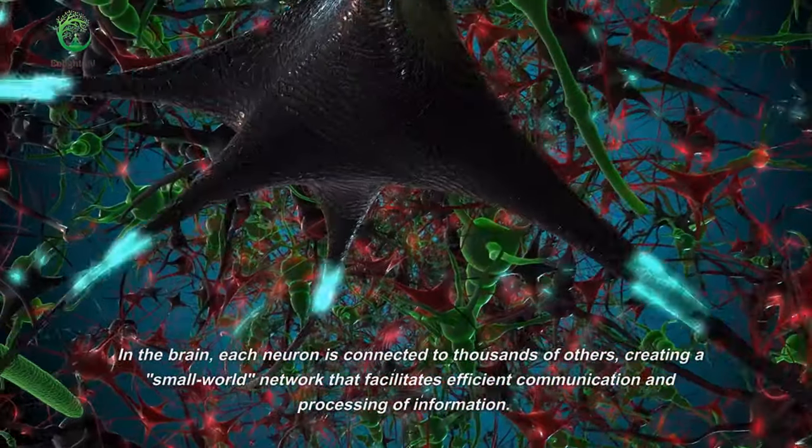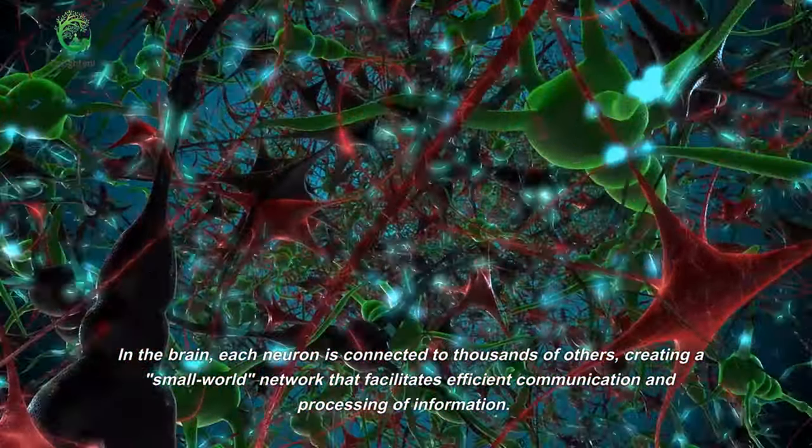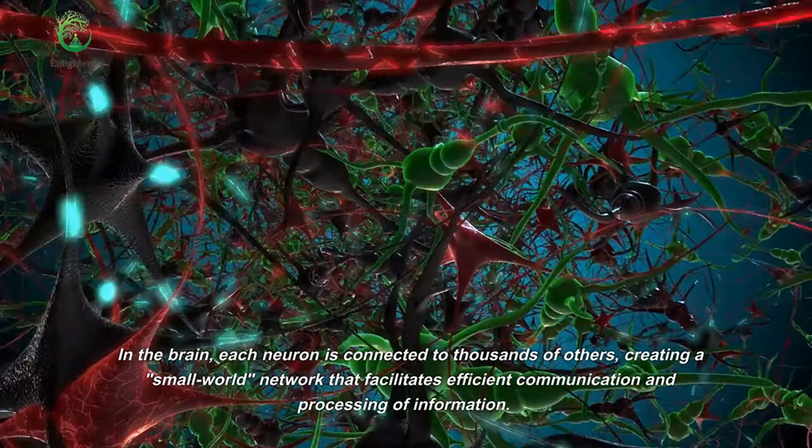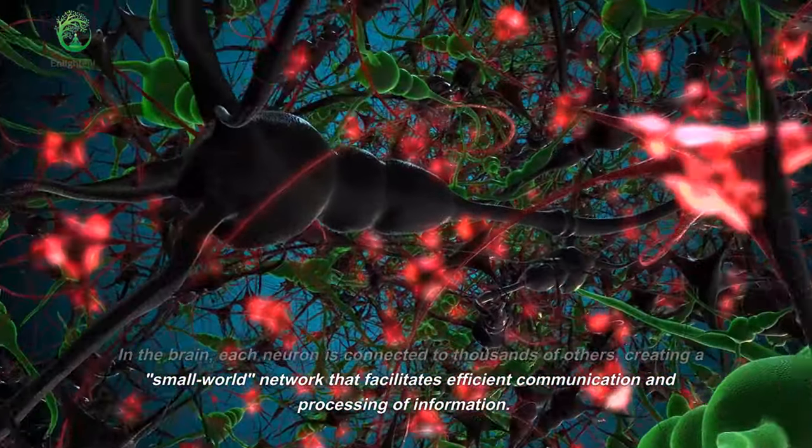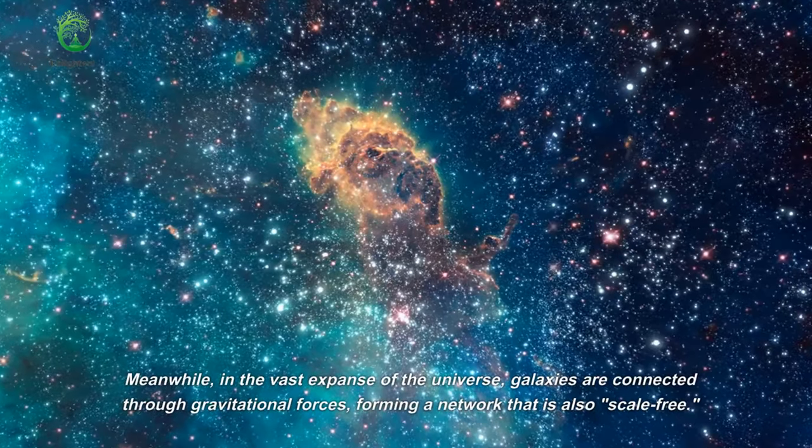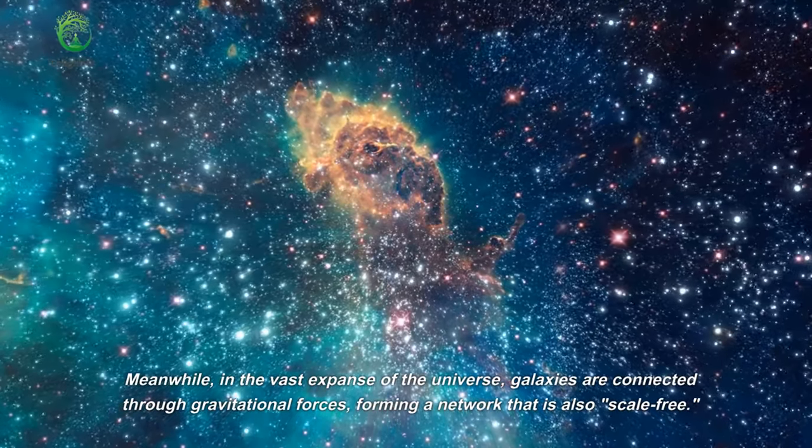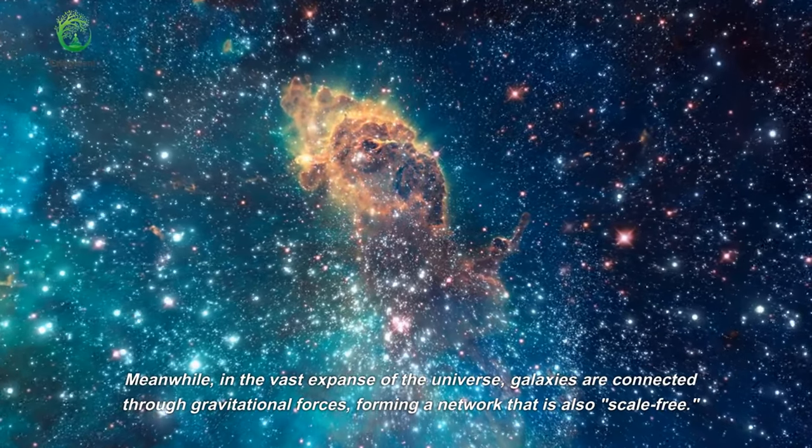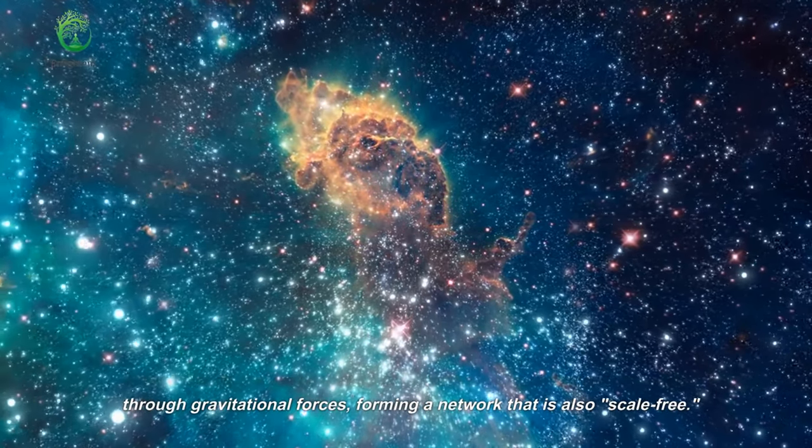In the brain, each neuron is connected to thousands of others, creating a small world network that facilitates efficient communication and processing of information. Meanwhile, in the vast expanse of the universe, galaxies are connected through gravitational forces, forming a network that is also scale-free.